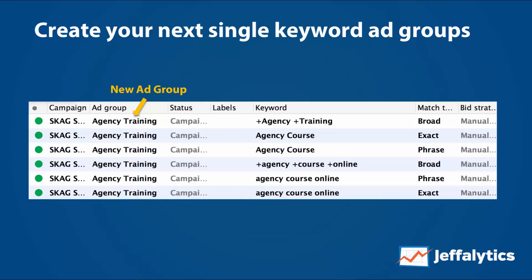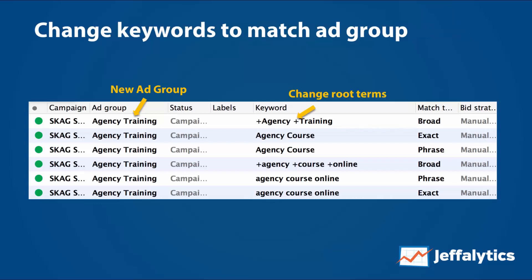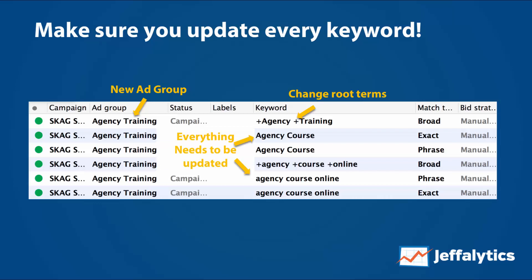If you want to create your next single keyword ad group, just copy and paste this one. I copied the agency course ad group and pasted it into a new ad group called 'agency training.' Then you update your root terms — everything that was 'agency course' becomes 'agency training.' Google AdWords Editor, the tool we're using here, has a simple find-and-replace text feature within the ad group. It takes two seconds, and you can do it for all your different ad groups. AdWords Editor is my favorite tool for creating single keyword ad groups.